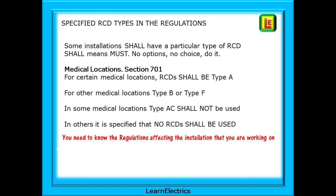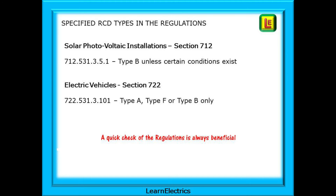You need to know the regulations that affect the installation you are working on. Take a look at solar photovoltaic installations — section 712 and regulation 712.531.3.5.1 specifies a type B RCD unless certain conditions exist. And then we have electric vehicles, section 722, where regulation 722.531.3.101 tells us that type A, type F or type B are the only RCD types to use. A quick check of the regulations is always beneficial.